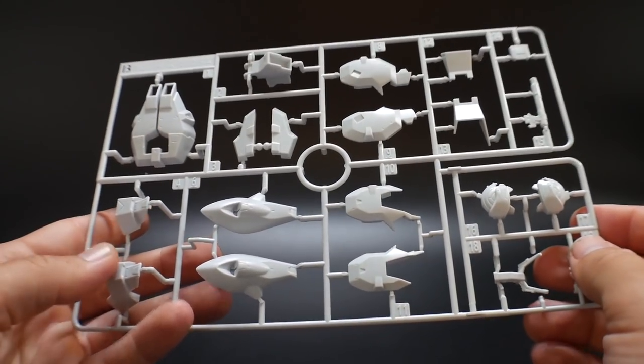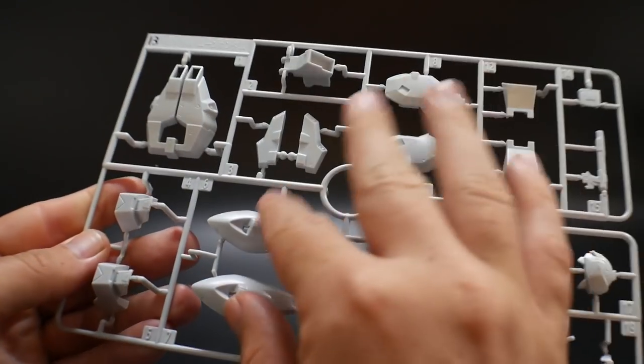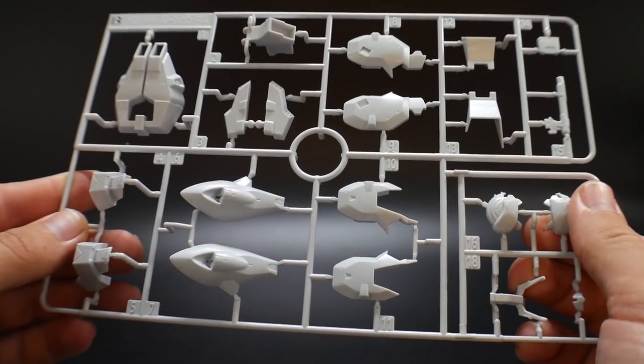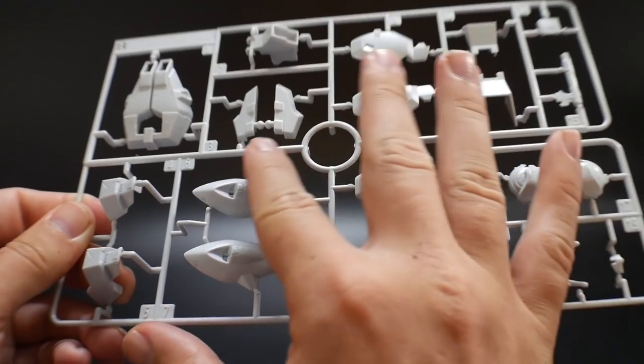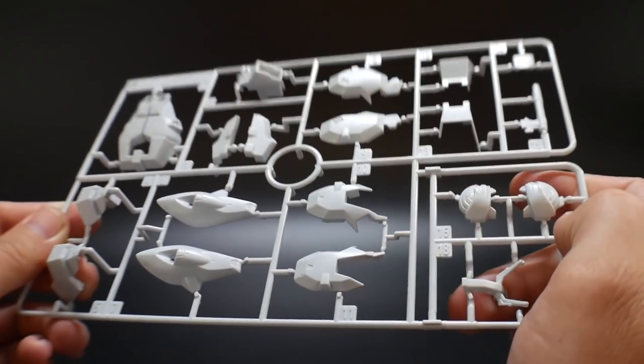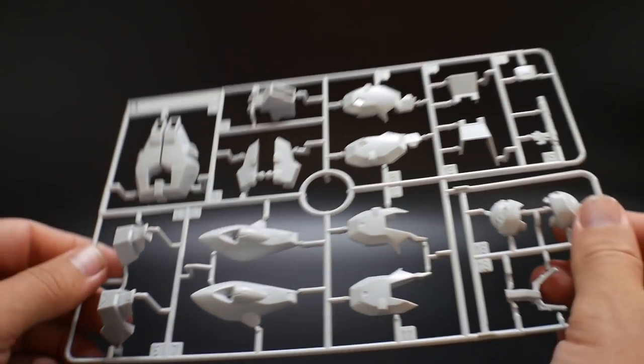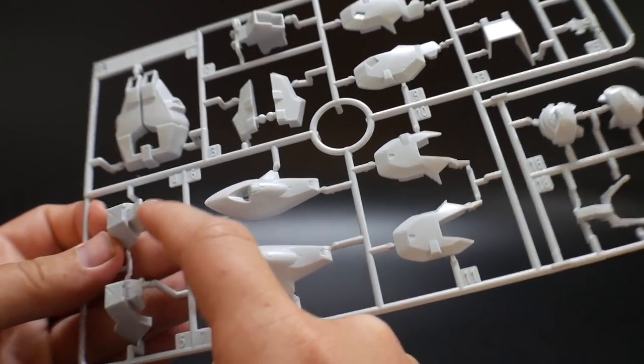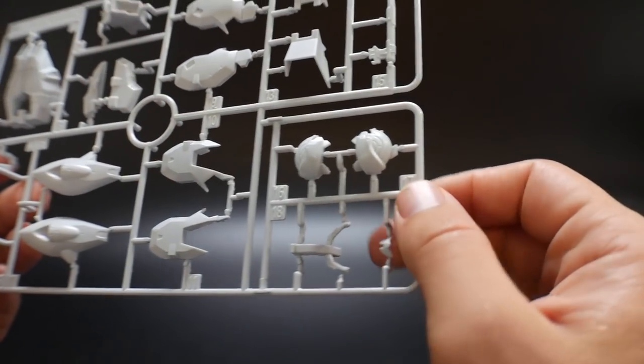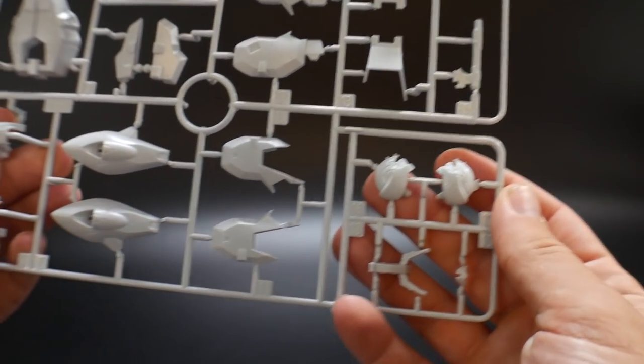And here's runner B. Runner B is going to be another white runner, but it still looks a little bit grayish to me. Could be just my eyes, but it definitely looks a little bit more gray tone than just a pure white. But this is just going to be the outer armor. So you got parts for the legs, the front skirts, ankle skirts, and then back skirts. And parts of the head right here in the corner.